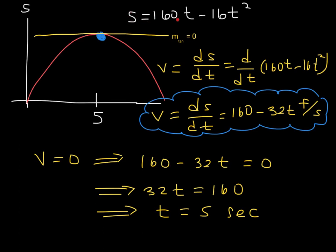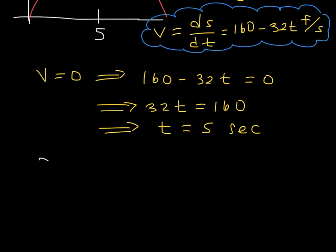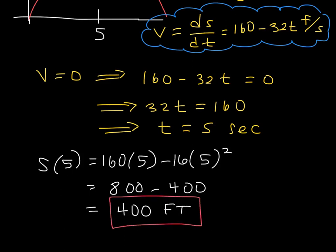S of 5 equals 160 times 5 minus 16 times 5 squared. That's 800 minus 16 times 25, which is 400. So we've found that the maximum height — how high does the rock go — the rock will go 400 feet up into the air.